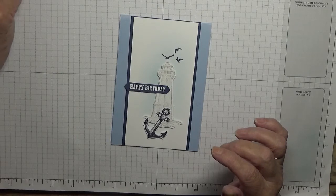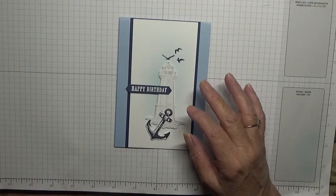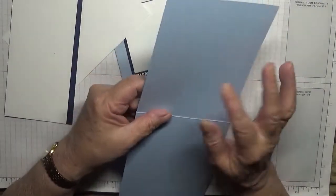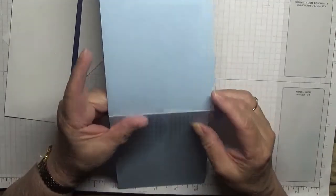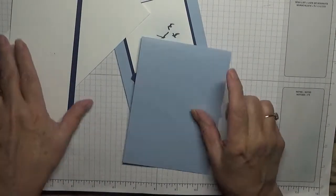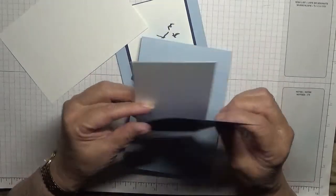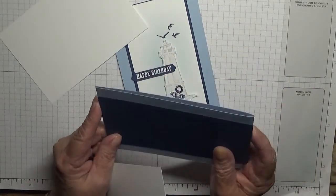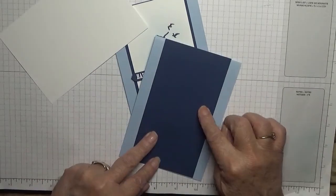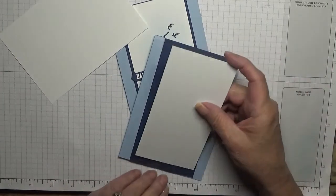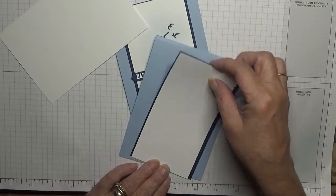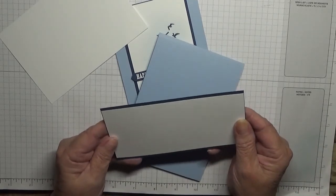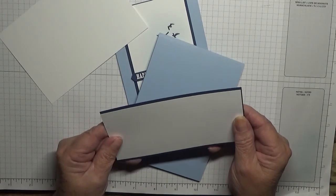The cardstock I've got is Soft Sea Foam, 11 and 3/4 by 4 and 1/8 folded in half. I have a piece of Night of Navy which is 5 and 7/8 by 3 and 1/8. And I have a piece of white cardstock at 5 and 7/8 by 2 and 7/8.